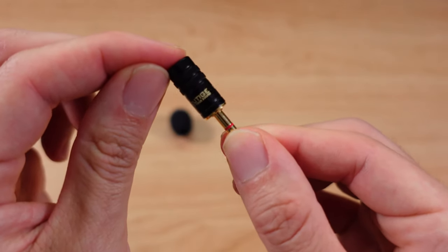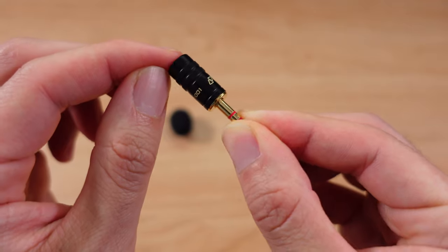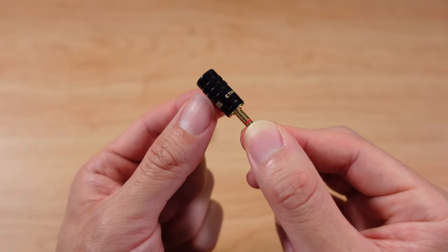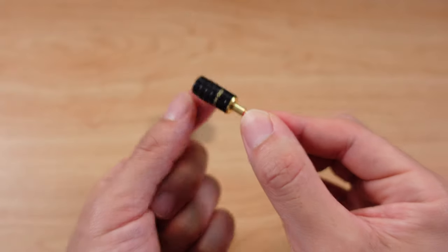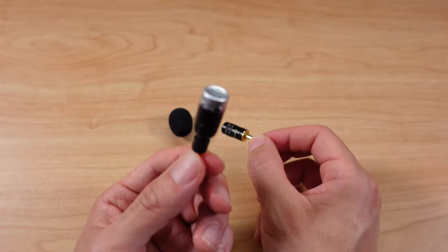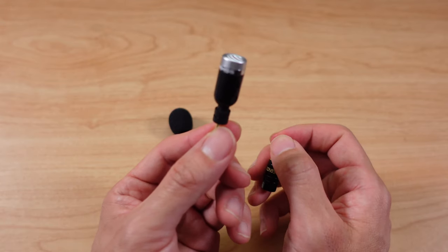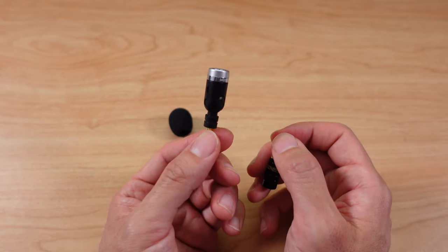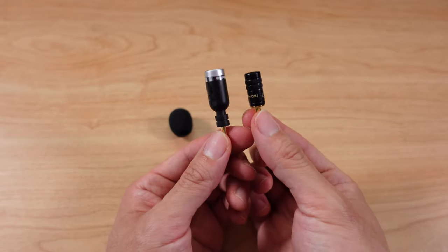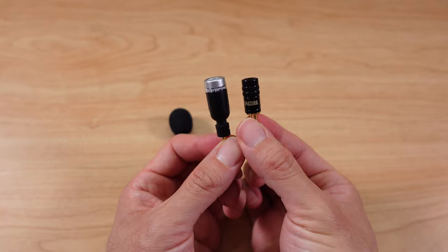Here's the Edutige ETM-001. In this video I'm going to do an audio test using the camera I'm shooting on right now, which is a Sony ZV1. I'm going to test this microphone and compare it to the Olympus ME52W. This is a noise canceling camera microphone, similar in size but completely different use.